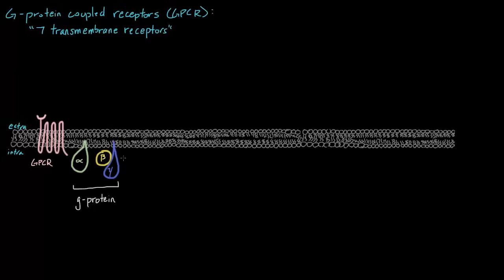Now, the final thing about this picture that I need to draw in is our GDP or GTP. As you remember, the whole point of a G-protein is because it binds GTP or GDP. Right now, this protein is inactive, and so it binds GDP, guanosine diphosphate. This GDP binds to the alpha subunit.